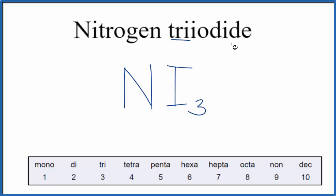So the formula for nitrogen triiodide is NI3. Note for the first element in these molecular equations, we don't write the prefix mono. That's only used when we have a single second element in a formula.